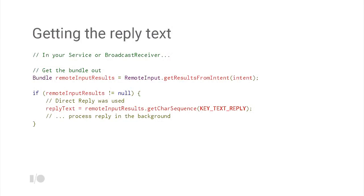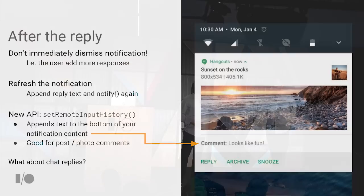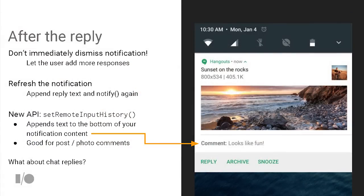After you get a reply, here's the flow: you post the notification, the user touches reply, types directly in it, you get the intent back, extract the text. Previously, our pattern was to just dismiss the notification after a direct reply. Not anymore. In N, we assume the user will decide to dismiss whenever they want, so they can post one or two quick messages in rapid succession without losing context. After you get a remote input direct reply, leave the notification up, and re-notify using setRemoteInputHistory, which draws a little line underneath your existing notification content and puts in any reply text — so the user can see the comment was posted and knows the transaction was completed.